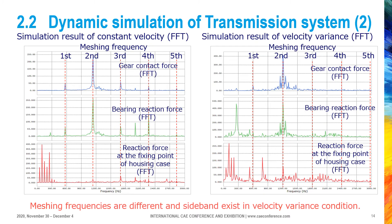This page shows a comparison of the two FFT results. FFT results showed that meshing frequencies are different and sidebands exist in the velocity variance condition. It is usual for real mechanical systems that driving conditions like rotational velocity are not constant. Dynamic analysis employing multi-body dynamics can simulate transmission systems with this kind of complex conditions, while static analysis cannot consider these kinds of realistic conditions.